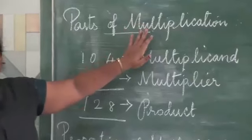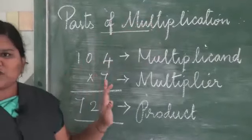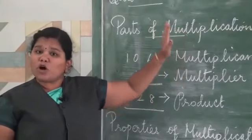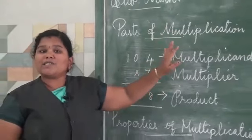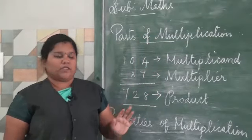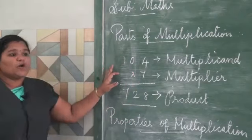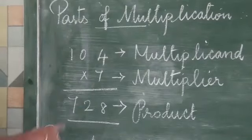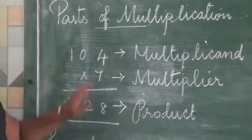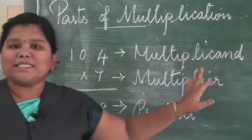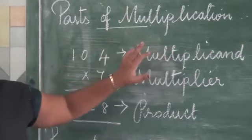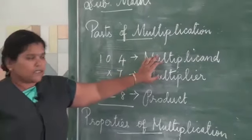What is multiplication? Multiplication is the product of two or more numbers — that is, multiplying two or more numbers together. In the parts of multiplication, the first term is the multiplicand. Here, 104 is the multiplicand. The number to be multiplied is called the multiplicand.